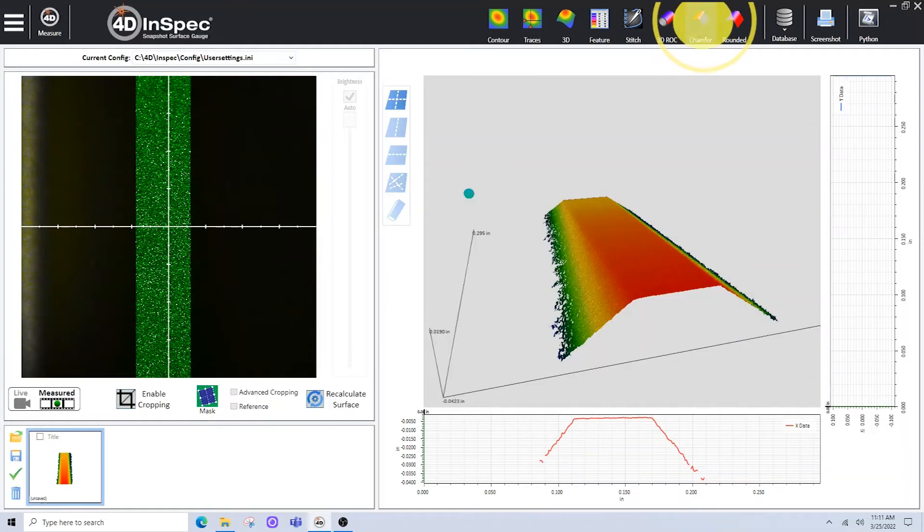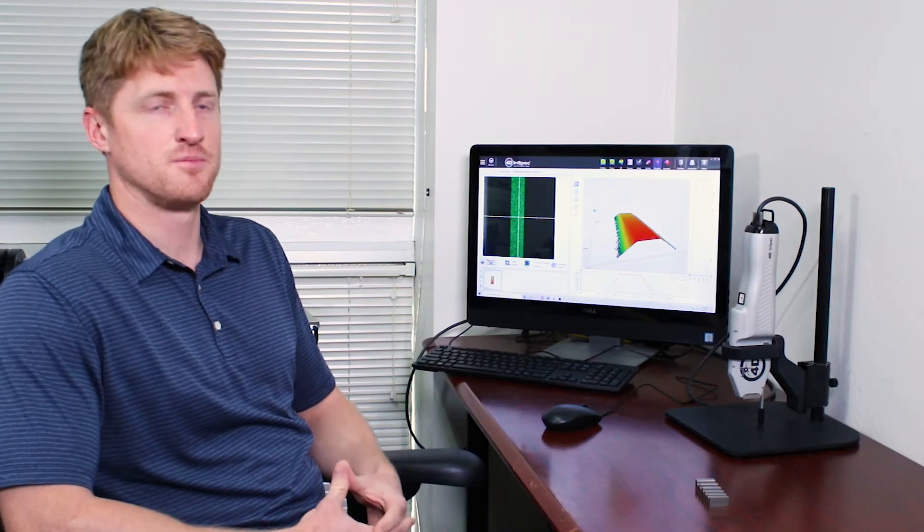Once I have a 3D measurement that I'm happy with, I can put this into chamfer analysis by clicking the chamfer icon at the top of the page.